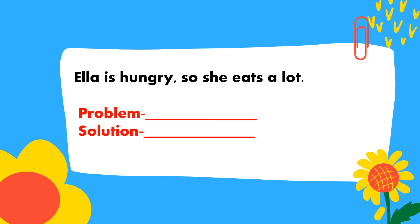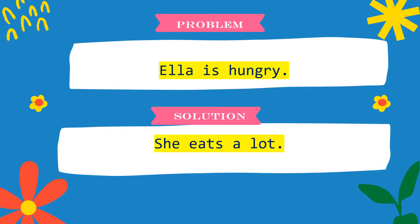So, let's have an example: 'Ella is hungry, so she eats a lot.' In that sentence, we have a problem and we also have a solution. The problem is 'Ella is hungry,' and the part that dictates the solution is 'she eats a lot.'